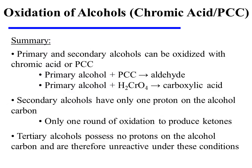In summary, primary and secondary alcohols can be oxidized with chromic acid or with PCC. When a primary alcohol is the substrate, treatment with PCC yields the aldehyde, but treatment with chromic acid yields the carboxylic acid instead.